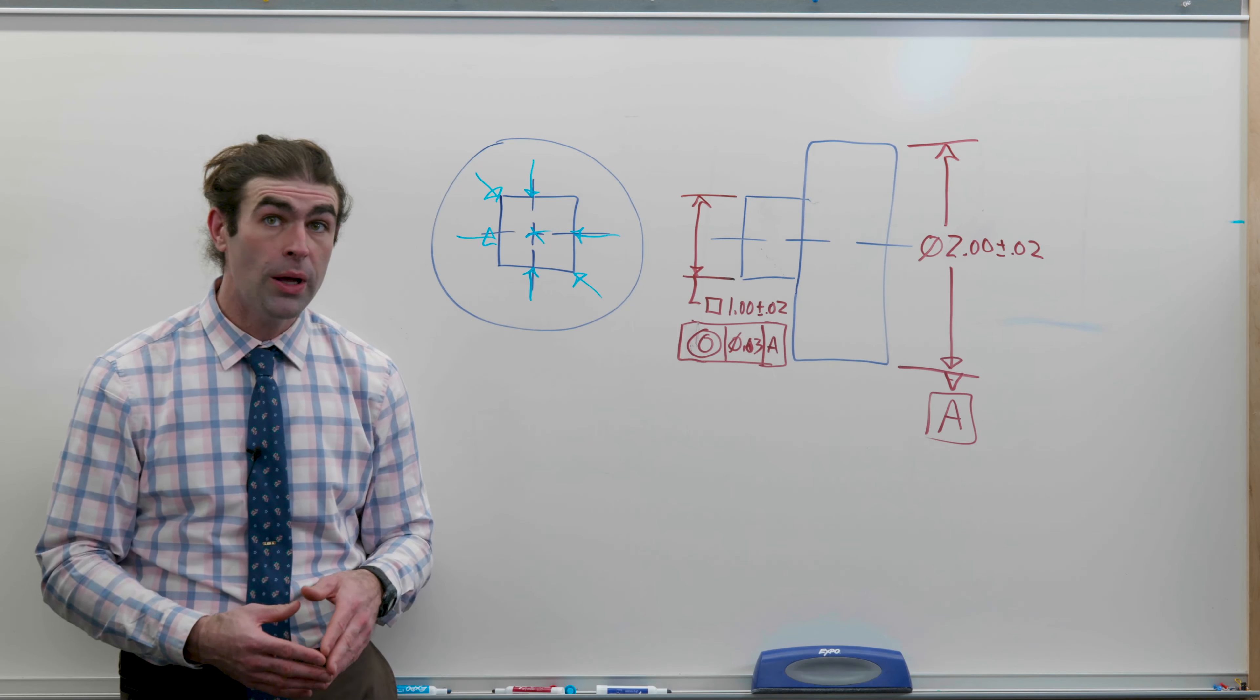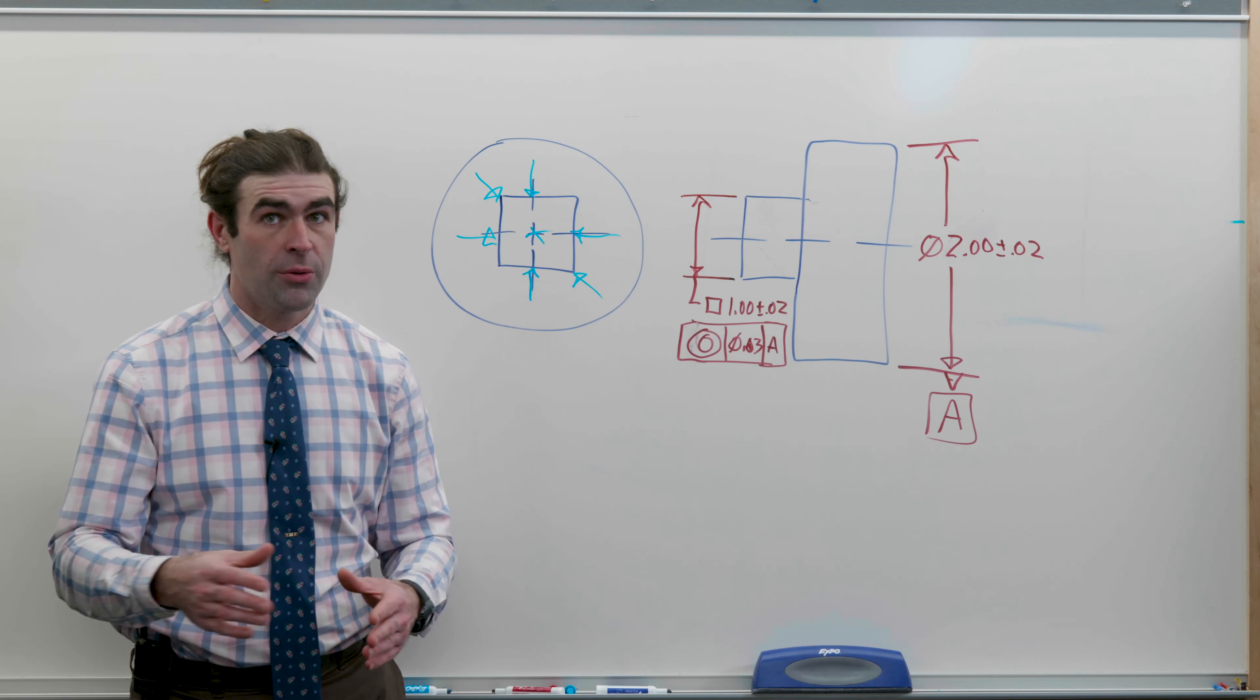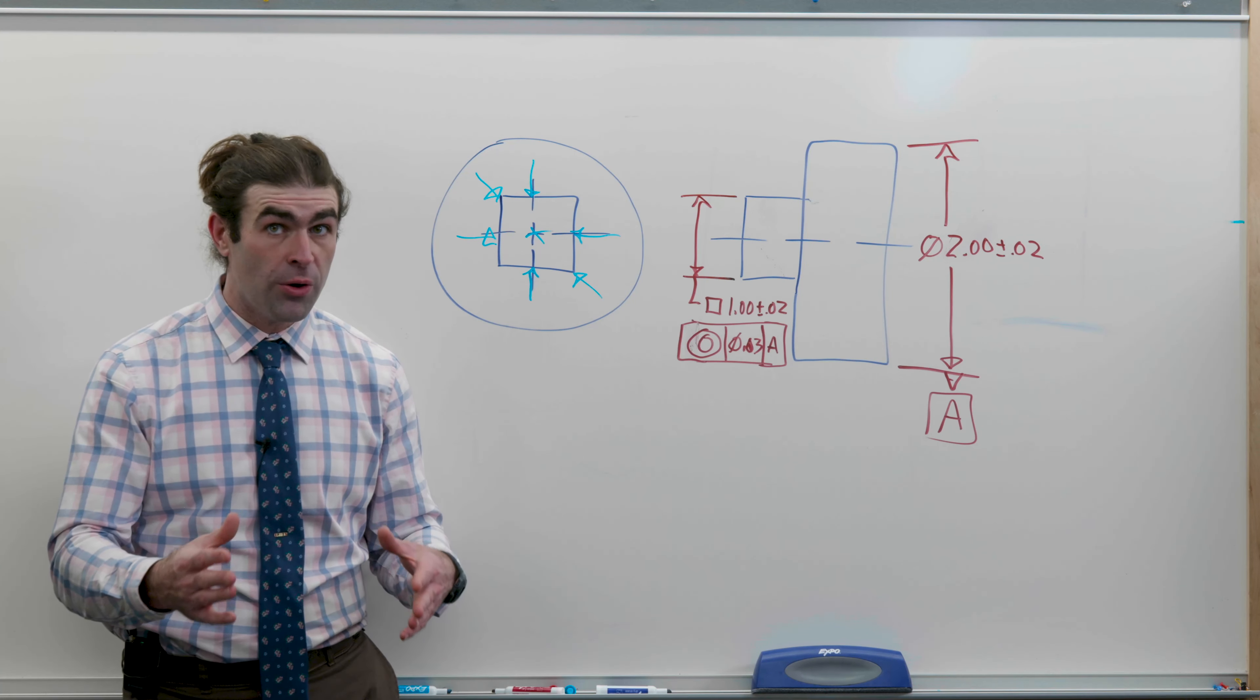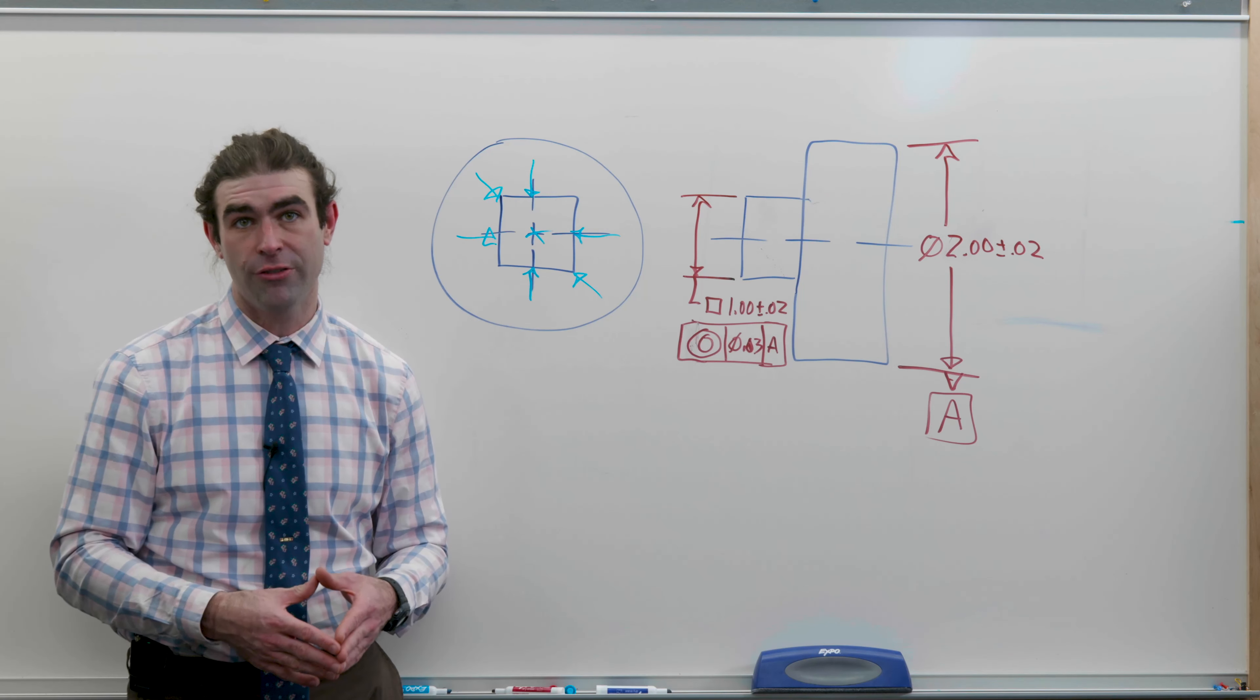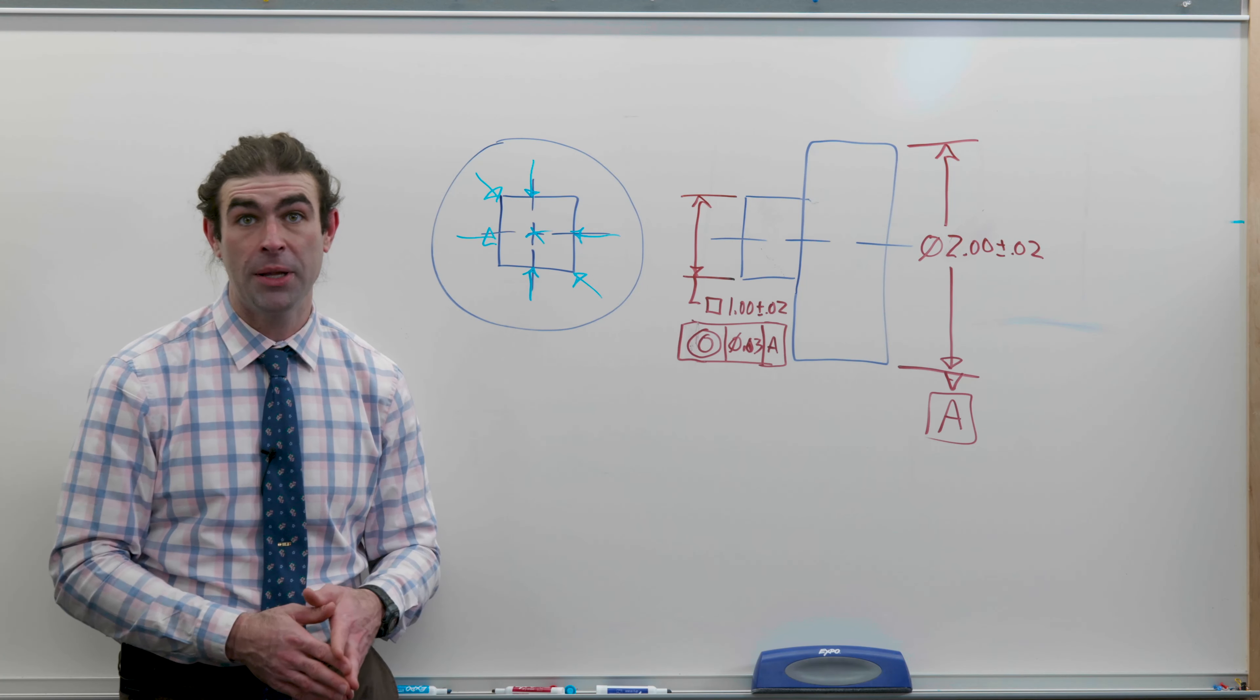That's it for this video. Just a quick discussion of concentricity. You really shouldn't use it unless you really need it. I'll put a card up for another video where I talk about other ways to control coaxiality. You should only use concentricity when it's absolutely necessary. But it is available, especially if your company is using an older version of the ASME standard, like 2009. If you enjoyed the video, please like and subscribe. Leave a comment down below.